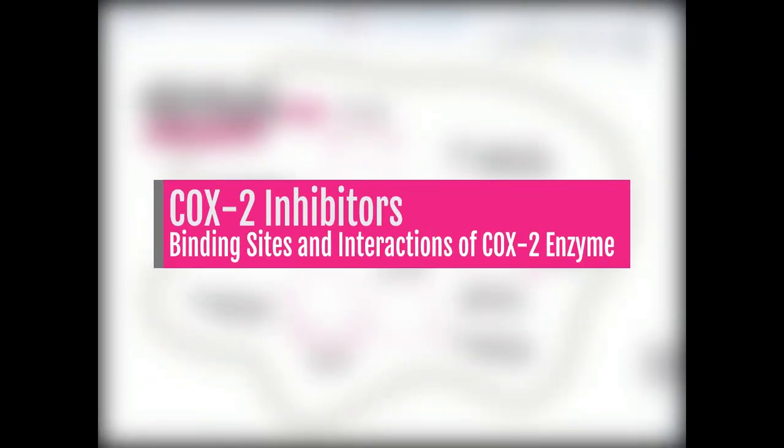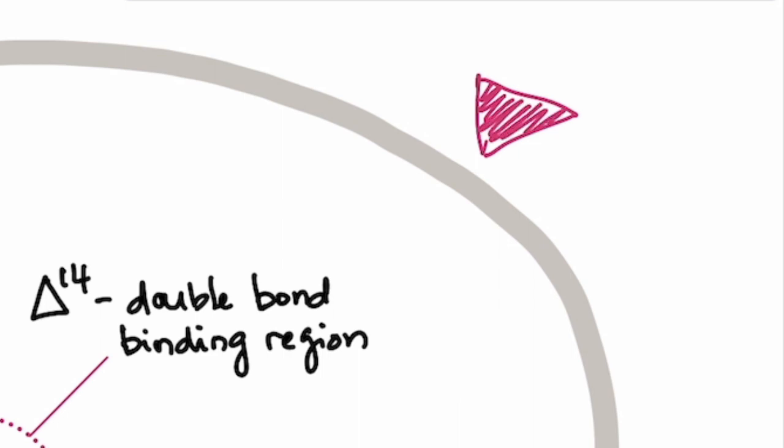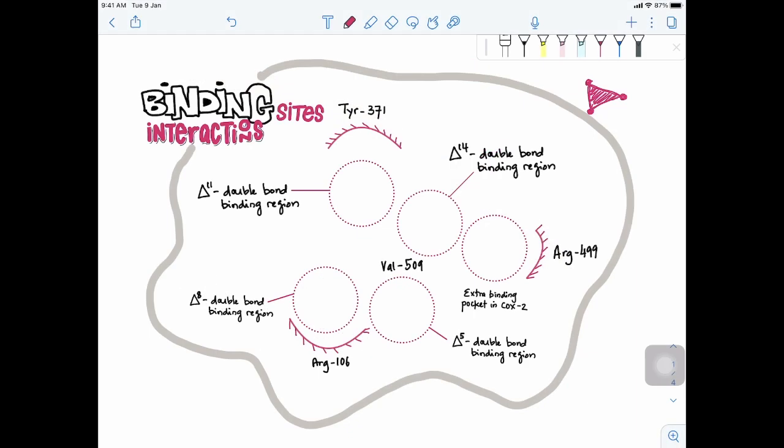Now you have seen the model of COX-2 inhibition. The triangle. This is very important. And now, how can these functionalities at the tip of the triangle interact with the binding site of COX-2 enzyme? Let's take a look.